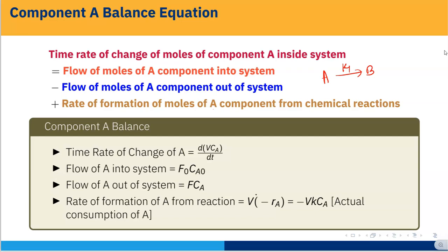We find each term one by one. The time rate of change of A is d(V·CA)/dt. Here V is the volume and CA is moles per volume, so V·CA has units of moles, and the time derivative gives moles per time — that is the time rate of change of A.